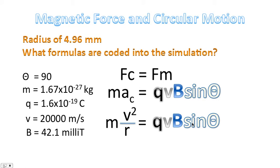Now, these are all our givens here. The theta is 90. We discussed that in a previous video. The mass of the proton is listed. The charge of the proton is exactly 1.6 times 10 to the negative 19 coulombs. Speed is 20,000 meters per second. And the magnetic field strength, B, was 42.1 millitesla. But a millitesla is 0.0421 teslas.